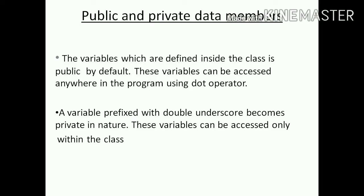The next topic is public and private data members. The variables which are defined inside the class are public by default. In a class, the variables defined are public type. That means the variables can be accessed anywhere in the program using the dot operator.